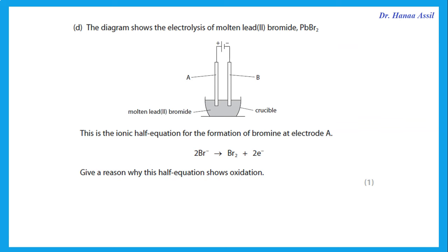The diagram shows electrolysis of molten lead bromide. This is the ionic half-equation for the formation of bromine. Give a reason why this half-equation shows oxidation. Oxidation is loss of electrons — this equation shows oxidation because bromide ions lost electrons.